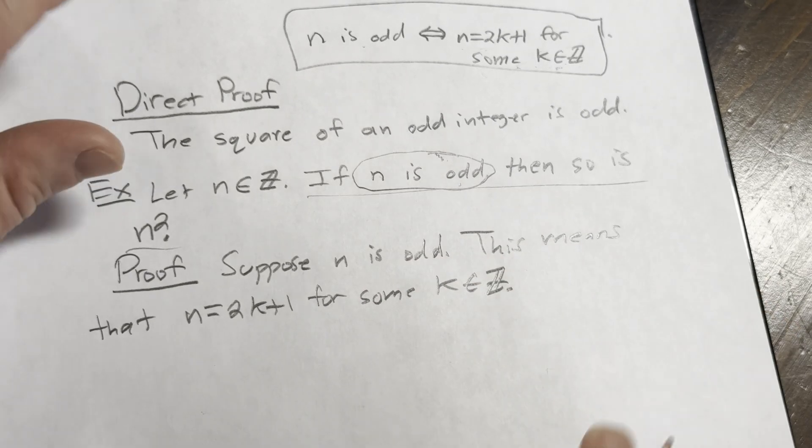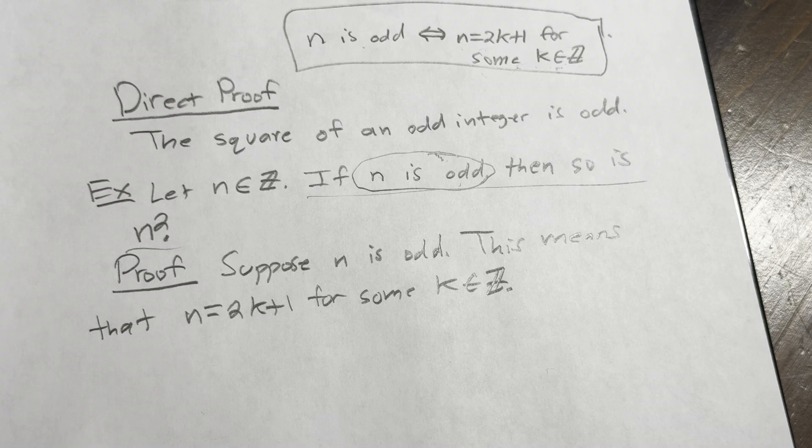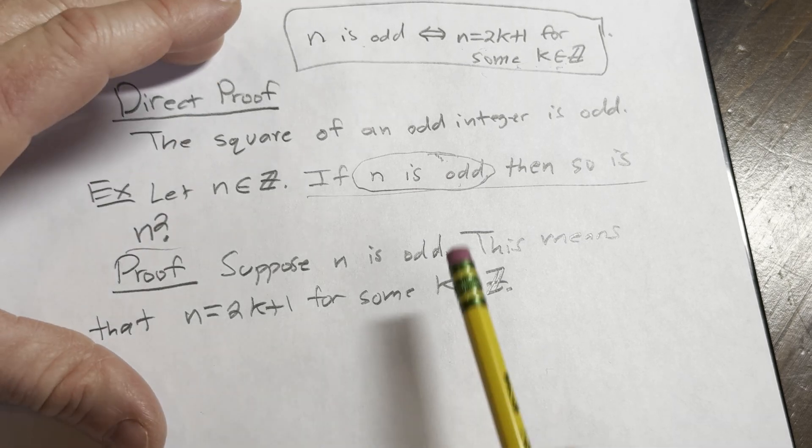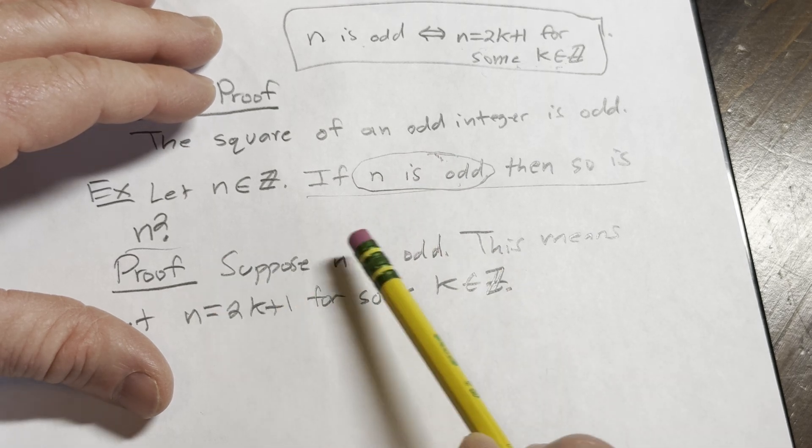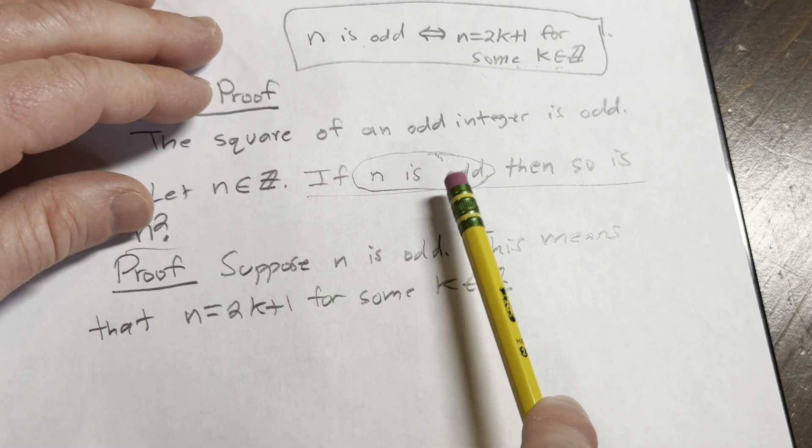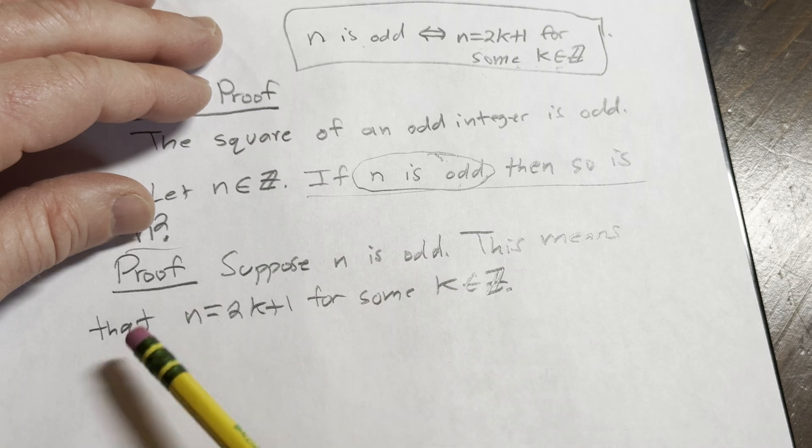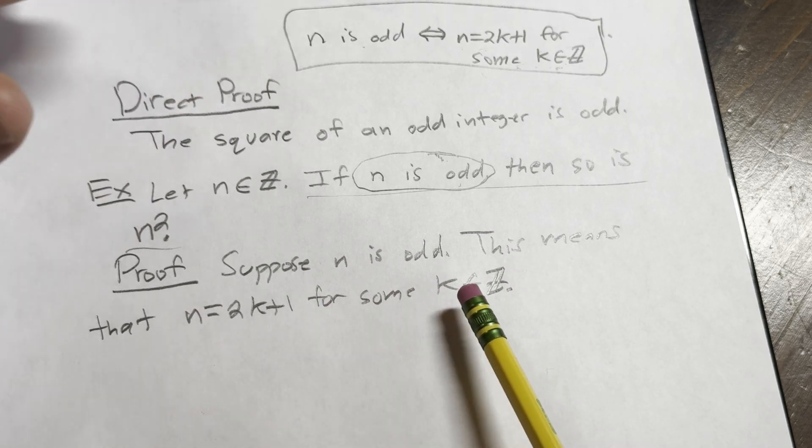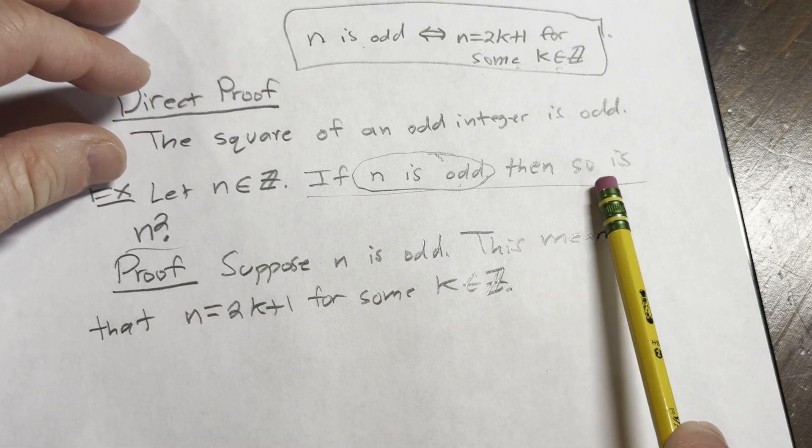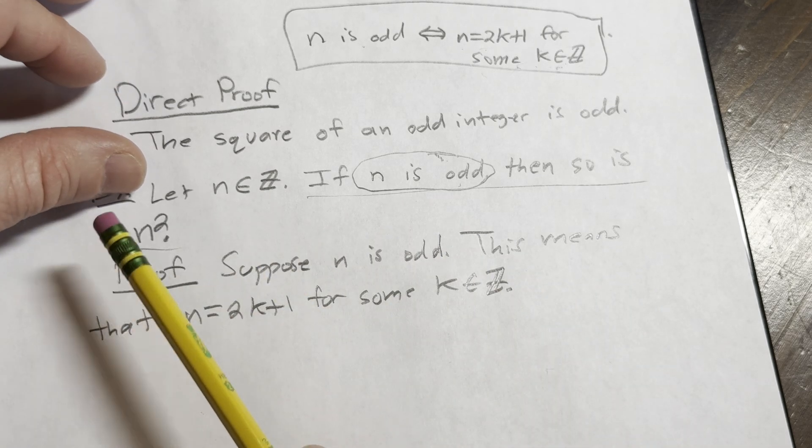And I know I'm going very slow with this proof, but I think it's important to take it slow. I know proof writing is one of the hardest things out there. So again, you start by assuming this piece here is true. So suppose n is odd. Then you write down what this means. This means that n is equal to 2k plus 1 for some k in Z. Now you have to show that n squared is odd.